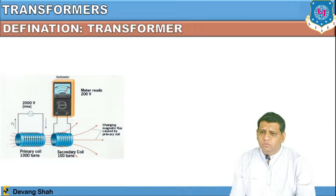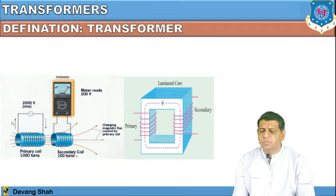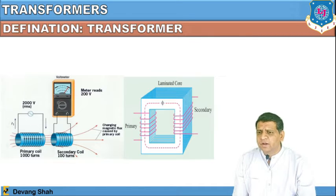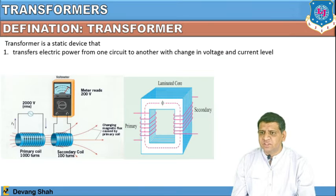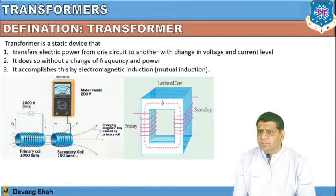Now let us discuss the definition of a transformer. A transformer has two windings — one is called the primary winding and another is called the secondary winding. Based on its symbolic representation, you can see a primary winding, a secondary winding, and in between a laminated core. Once voltage is applied at the primary winding, magnetic flux is produced around the core and EMF is induced in the secondary. A transformer is a static device — not movable — that transfers electric power from one circuit to another with a change in voltage or current level, without change in frequency and power, by electromagnetic induction called mutual inductance.